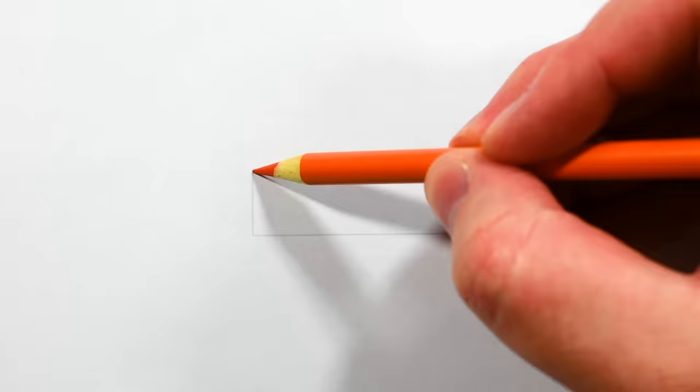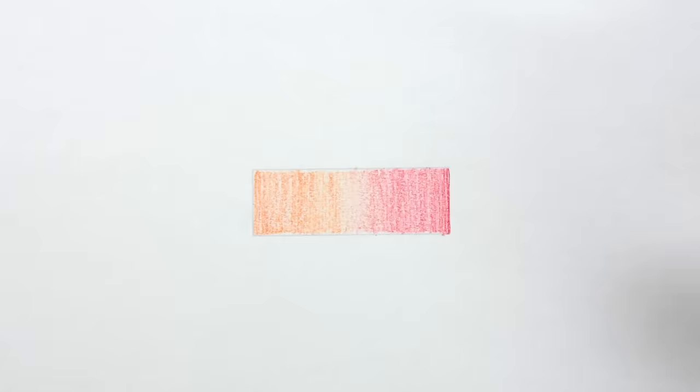When blending multiple colors use the same approach. Start coloring with one pencil and shade a little lighter where you want to blend it with the other color. Now take the other color and repeat the process, adding layers in those three directions until you get a smooth transition.